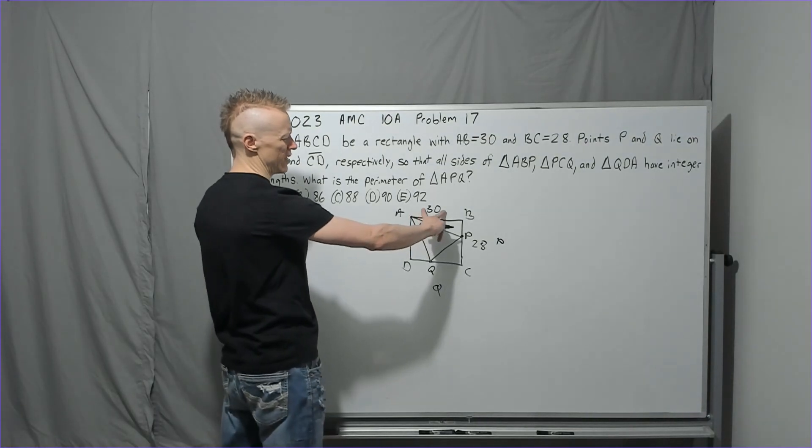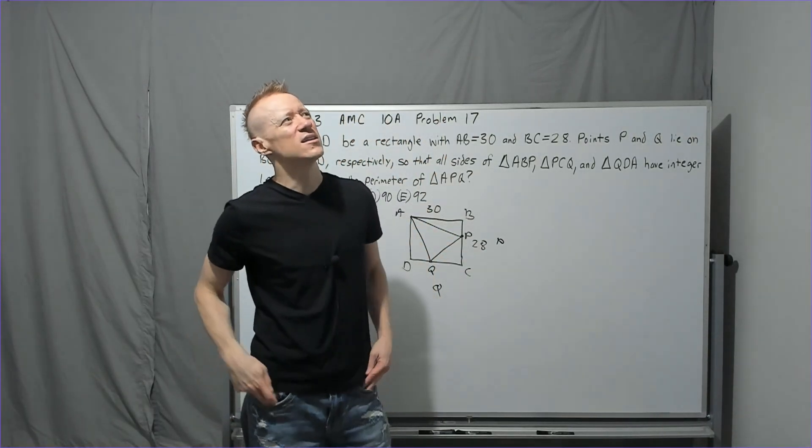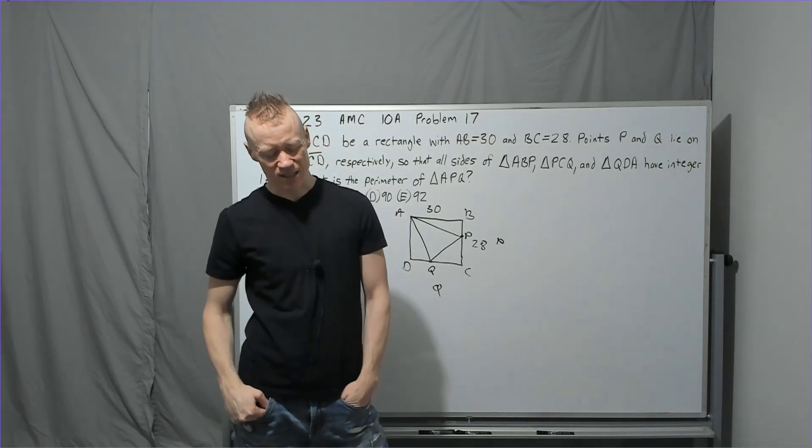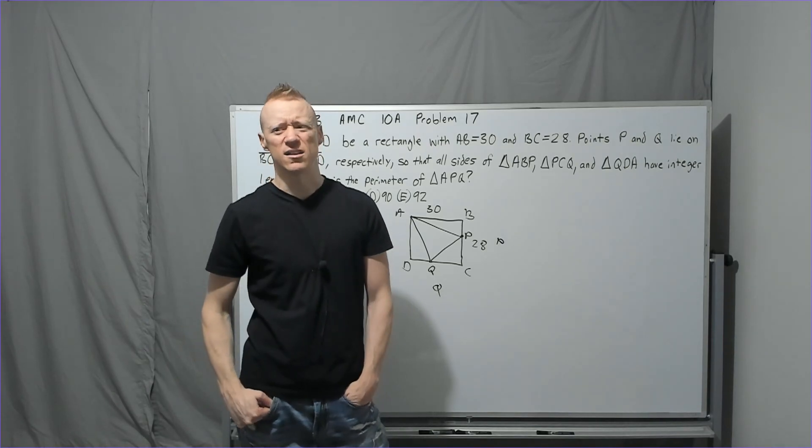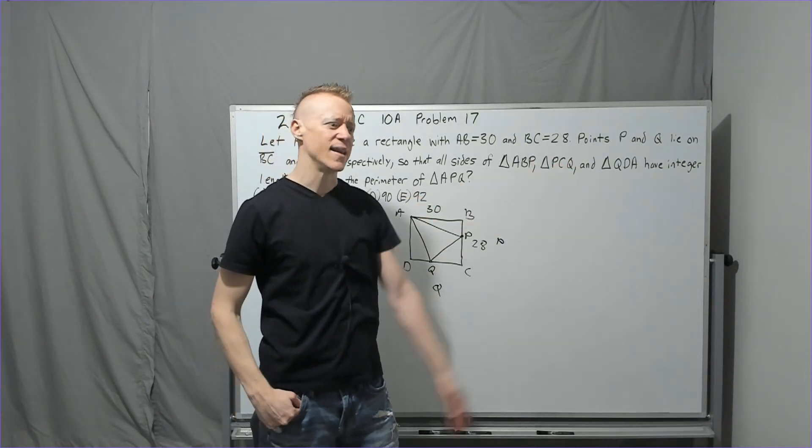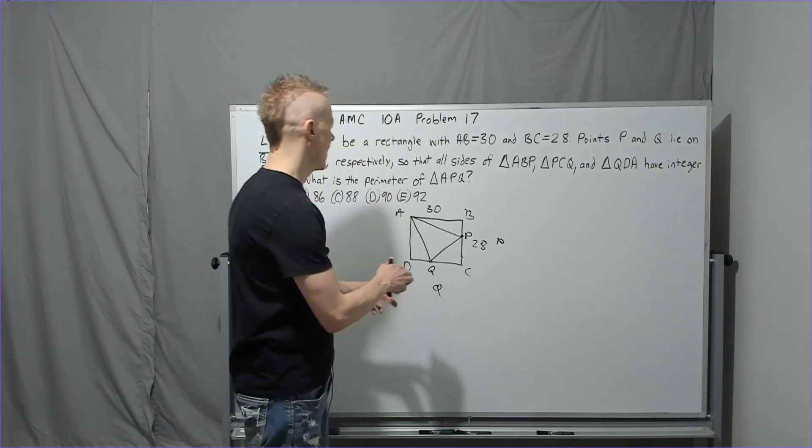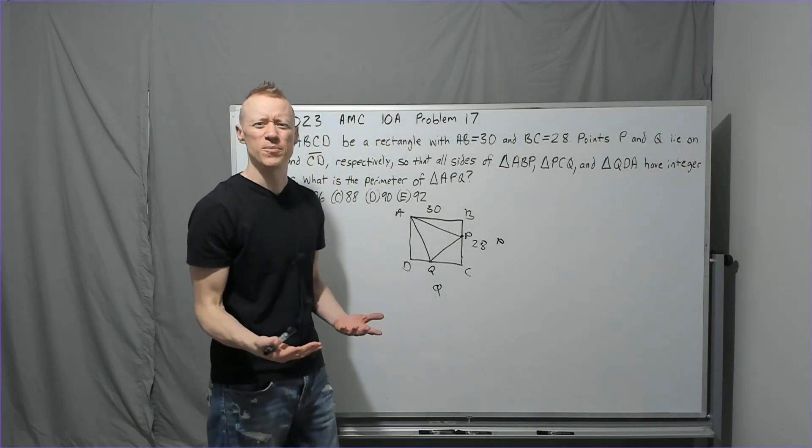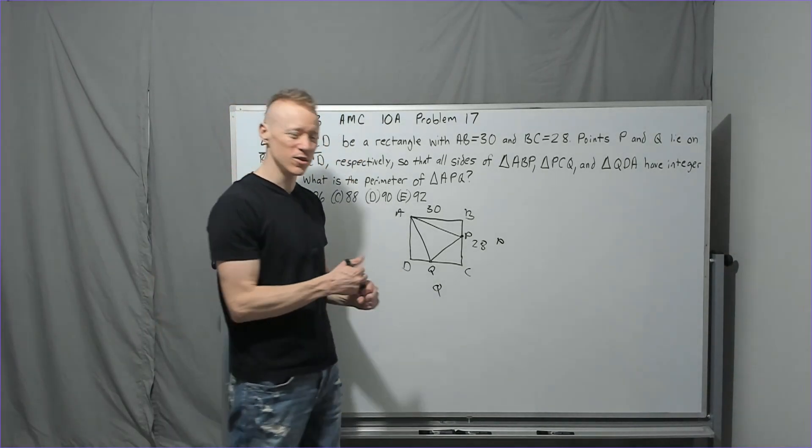So then what do we look at here? 30... I mean, I wish there was some concept that looked at integer lengths and right triangles. Maybe like a dead Greek guy could have given it to us and somebody could have added the word triple, like a Pythagorean triple, right? So you go, okay, I got to recall my Pythagorean triples. This is AMC 8 level, Pythagorean triples.